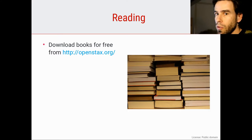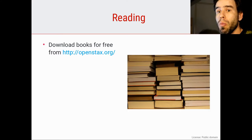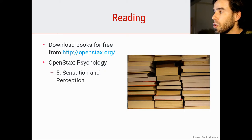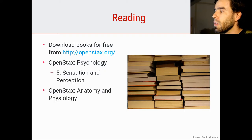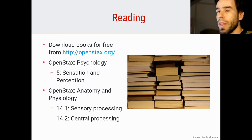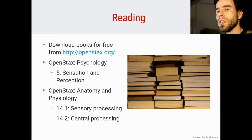As throughout this course, we're going to use the free textbooks provided by openstax.org, which you can download for free from this URL. From the psychology textbook we're going to use chapter 5, Sensation and Perception. And from the anatomy and physiology textbook we're going to rely on section 14.1 about sensory processing, and 14.2 about central processing.